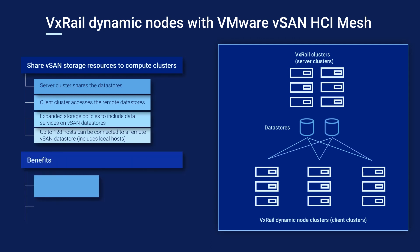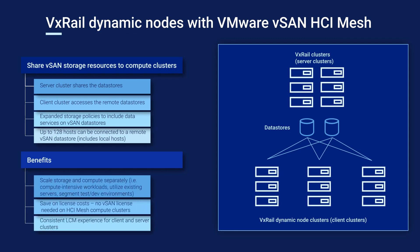Similarly, Dynamic Nodes with vSAN HCI Mesh offers customers the ability to scale their storage and compute separately based on workloads and use cases. There is also a cost benefit where customers can potentially save on vSAN license costs by using remote data stores for their applications. Keep in mind that there will be performance degradation when using a remote data store compared to a local one. Above all, VxRail HCI System Software remains the common factor, and VxRail users can count on the same operational simplicity for their LCM experience across VxRail vSAN and dynamic node clusters.